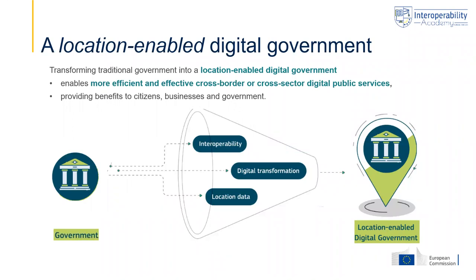In this slide, we show you the key elements discussed throughout the different modules of the course that talked about Location-Enabled Digital Government — which refers to the transformation from a traditional government into a location-enabled digital government, where location data and location technologies are used to enable more efficient and effective services, also cross-border and cross-sector services, which in the end provides benefits to citizens, businesses, and governments. For that, we identified three key building blocks or three main ingredients.